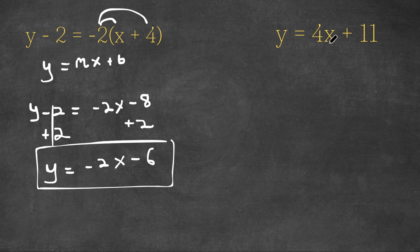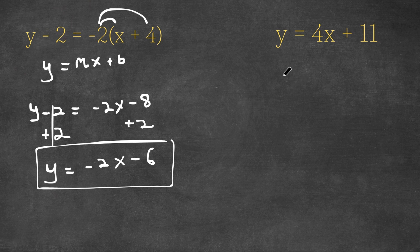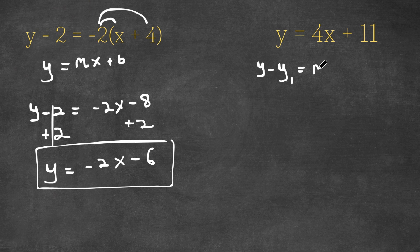Now for y is equal to 4x plus 11, we want to get this equation in the form y minus y sub 1 is equal to m times x minus x sub 1.